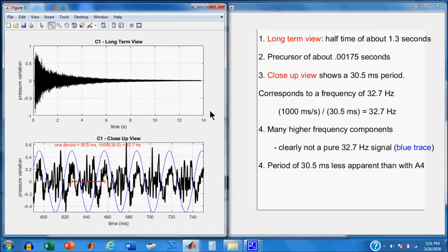This is, as I say, clearly not a pure cycle. A pure 32.7 hertz signal, so here's what it would sound like. At least according to the computer. And also, I'll make a final comment here that identifying the period of repetition is a little more difficult than it was for the A4.